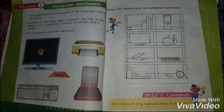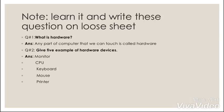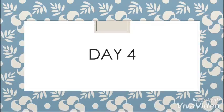So on page number 10 and 11 you have different activities. On page number 11 there is an activity where you have to color the hardware part of computer. Next, you have to write these two questions: what is hardware and give five examples of hardware devices on loose sheets, and you have to write them and learn them.